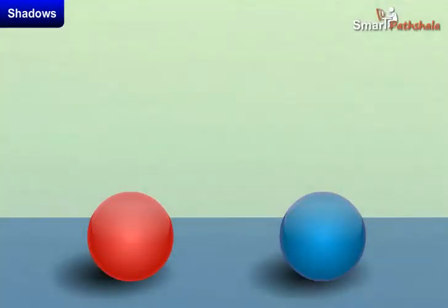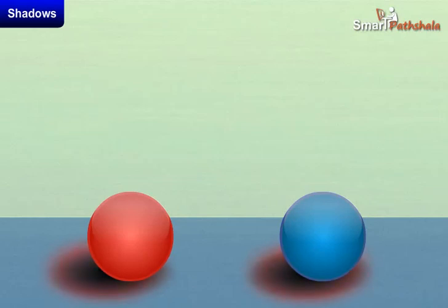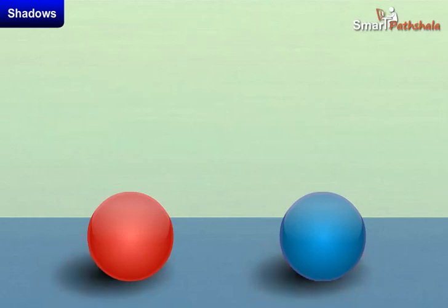The color of the shadow does not depend on the color of the object. For example, two balls of the same size with different colors — red and blue respectively — will give shadows of the same size and color.